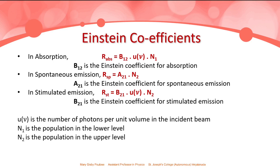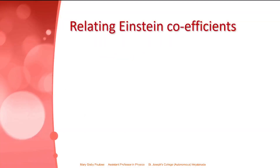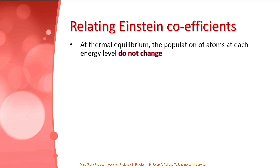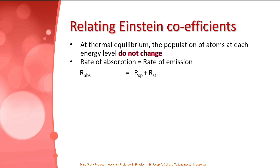In order to achieve lasing action we need to increase the rate of stimulated emission. First, we find the relation between the Einstein coefficients. At thermal equilibrium, the populations of atoms at each energy level remain the same — they do not change. So even if light is incident upon the matter, the rate of absorption equals the rate of emission. Taking the equations, we can write: B12·u(ν)·n1 = A21·n2 + B21·u(ν)·n2.